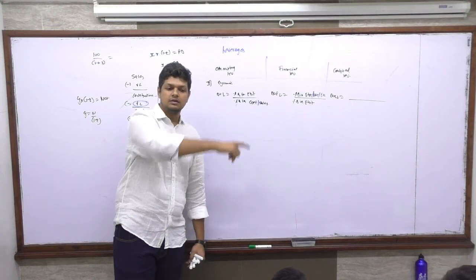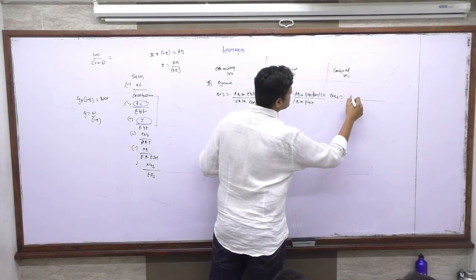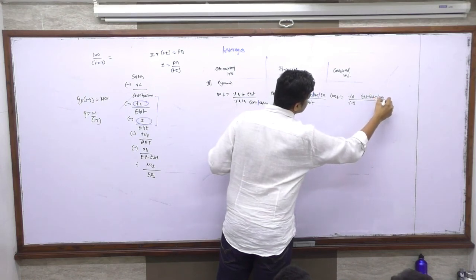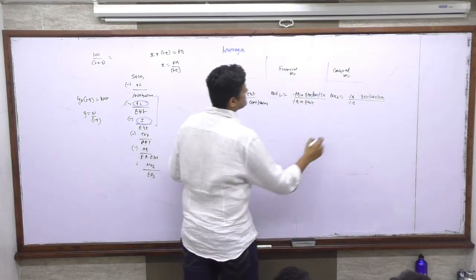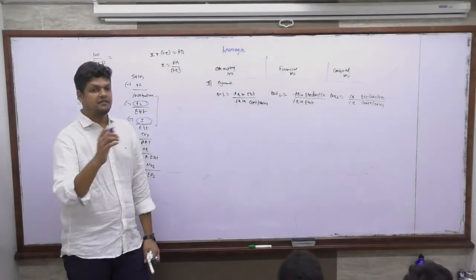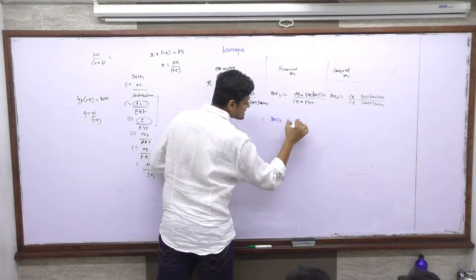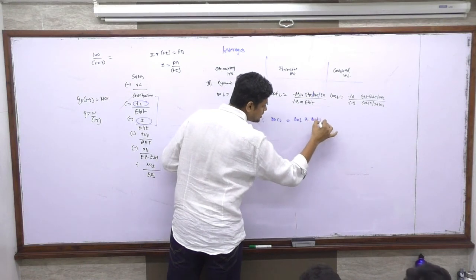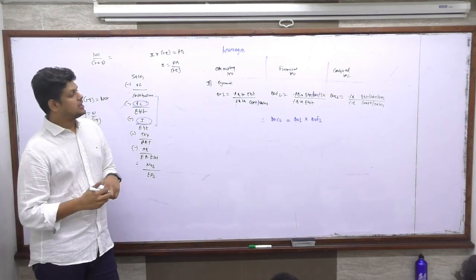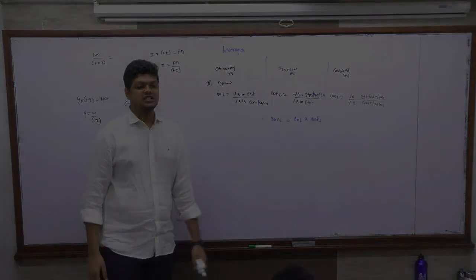For combined leverage, the dynamic formula is percentage change in EBIT, PAT, or EPS upon percentage change in contribution or sales. Degree of combined leverage is therefore nothing but degree of operating leverage multiplied by degree of financial leverage. This is the final formula — degree of combined leverage is a product of both degree of operating leverage and degree of financial leverage.